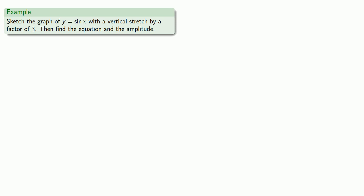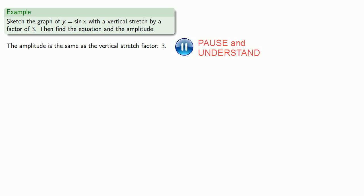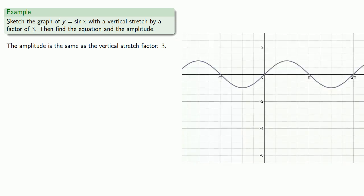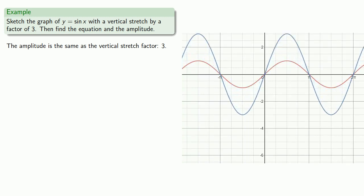Now let's have a vertical stretch by a factor of 3 and find the equation and the amplitude. The amplitude is the same as the vertical stretch factor, which is 3. So we'll start with the graph of sine of x and stretch it vertically by a factor of 3. That vertical stretch has the same effect as it would on any other function, and the new equation is y equals 3 sine of x.